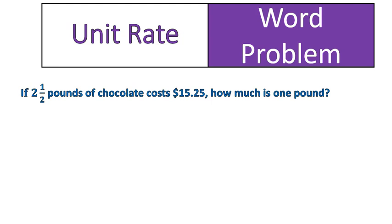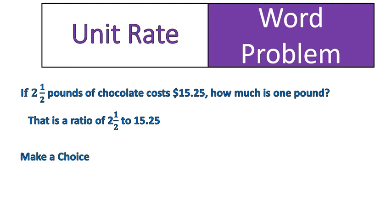Now let's get into a little bit of practice. If two and a half pounds of chocolate costs fifteen dollars and twenty-five cents, how much is one pound of chocolate? This is a simplified version of a question similar to the previous one. First, we would set it up as a ratio — two and a half to fifteen point two five. Writing a ratio of a mixed number to a decimal is a bit awkward, so we need to make a choice: go all fractions or go all decimals.